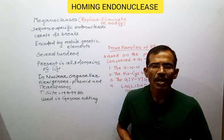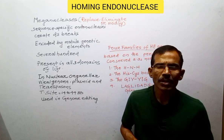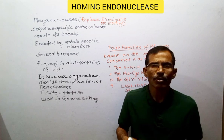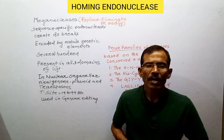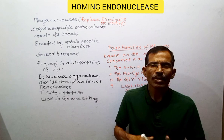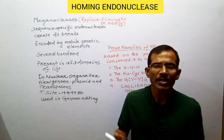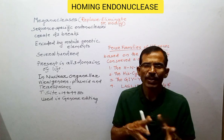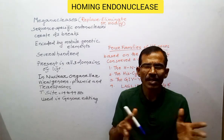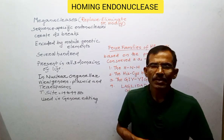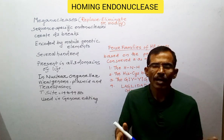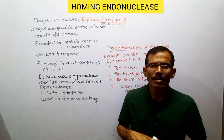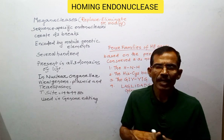Hello and welcome to some biology class. Today we shall discuss about meganucleases. Meganucleases are sequence-specific endonucleases that create double-stranded breaks at specific locations in the DNA. These enzymes are encoded by mobile genetic elements. Several hundred meganucleases have been identified.